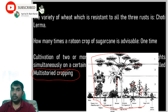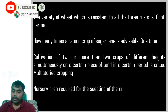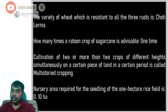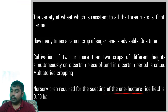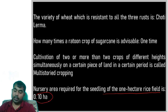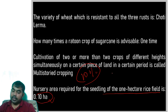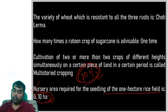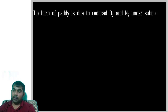The nursery area required for seedlings for one hectare of rice field is 0.1 hectare. That is, only 10% of the main field area is needed for making the nursery bed to grow rice seedlings.